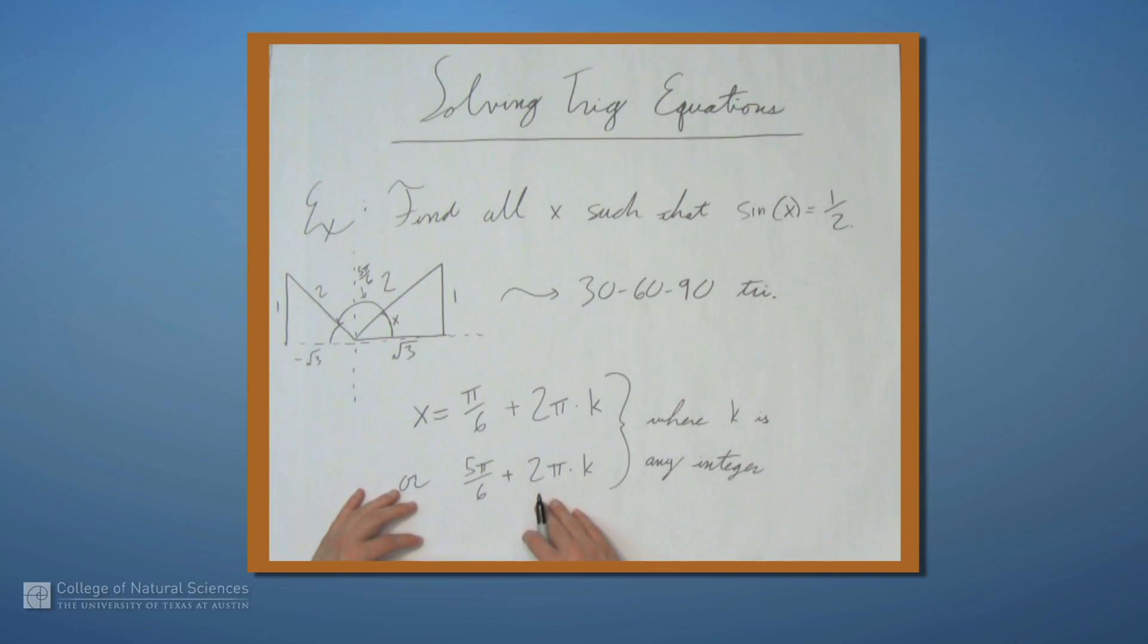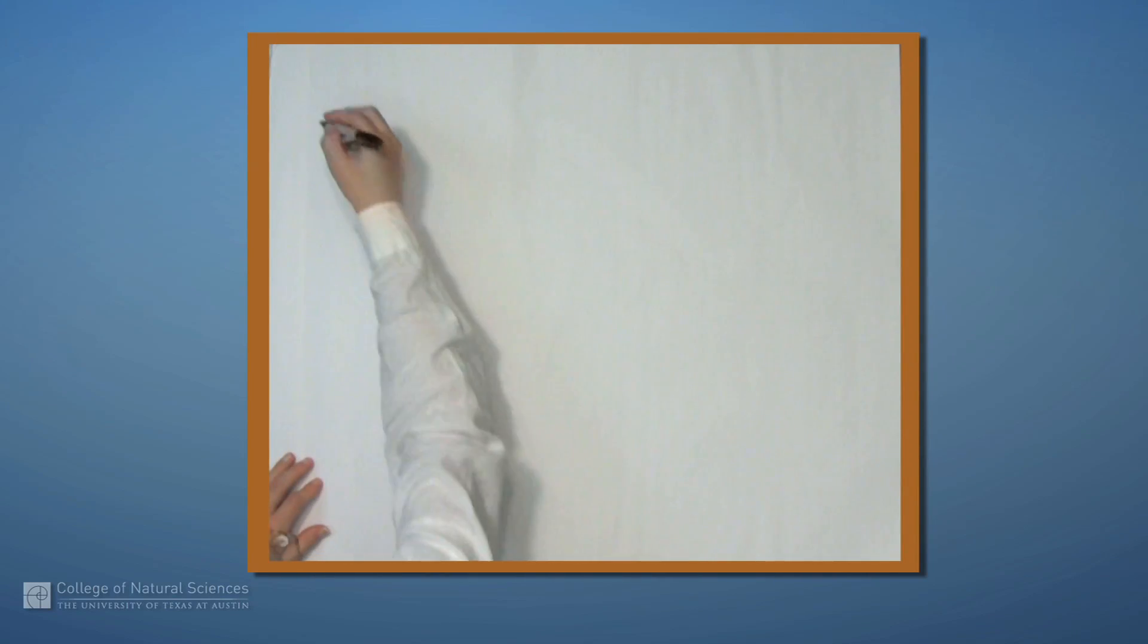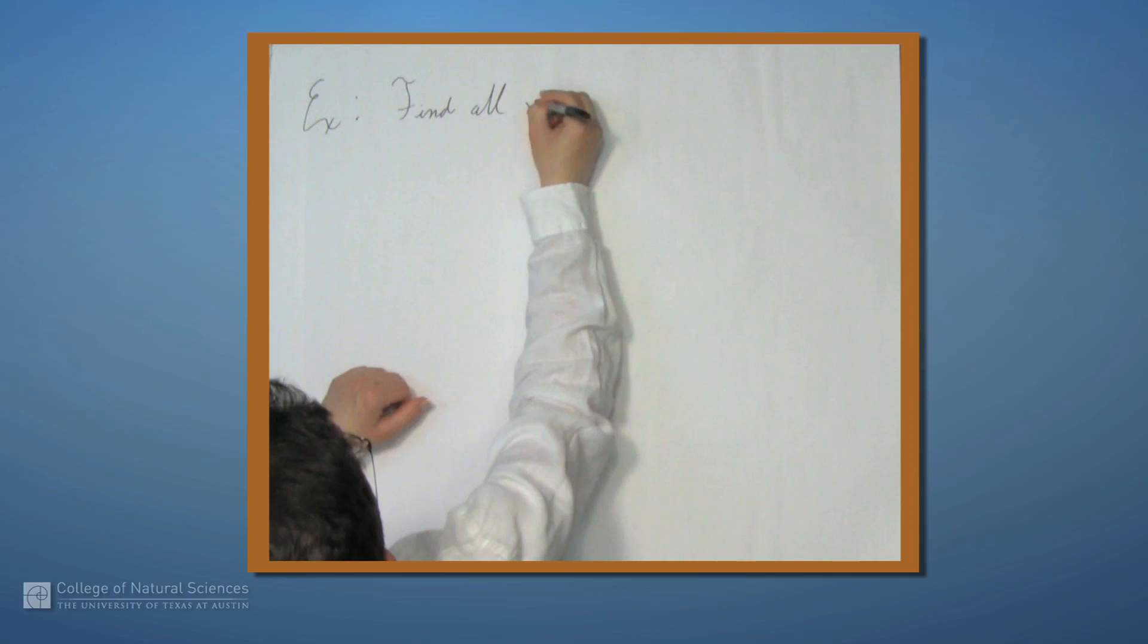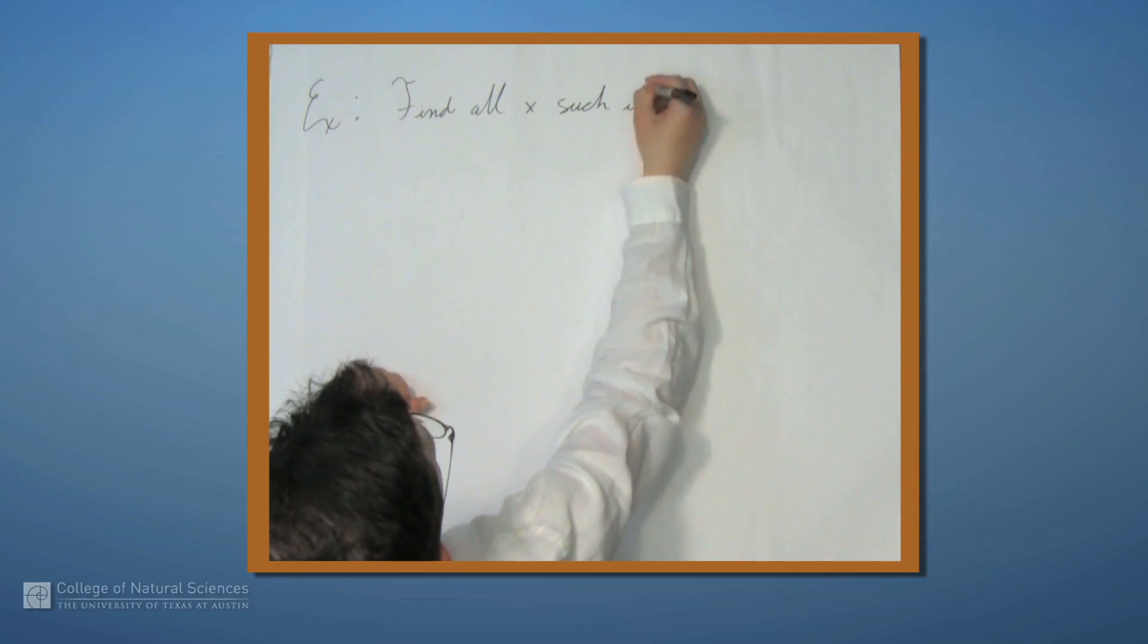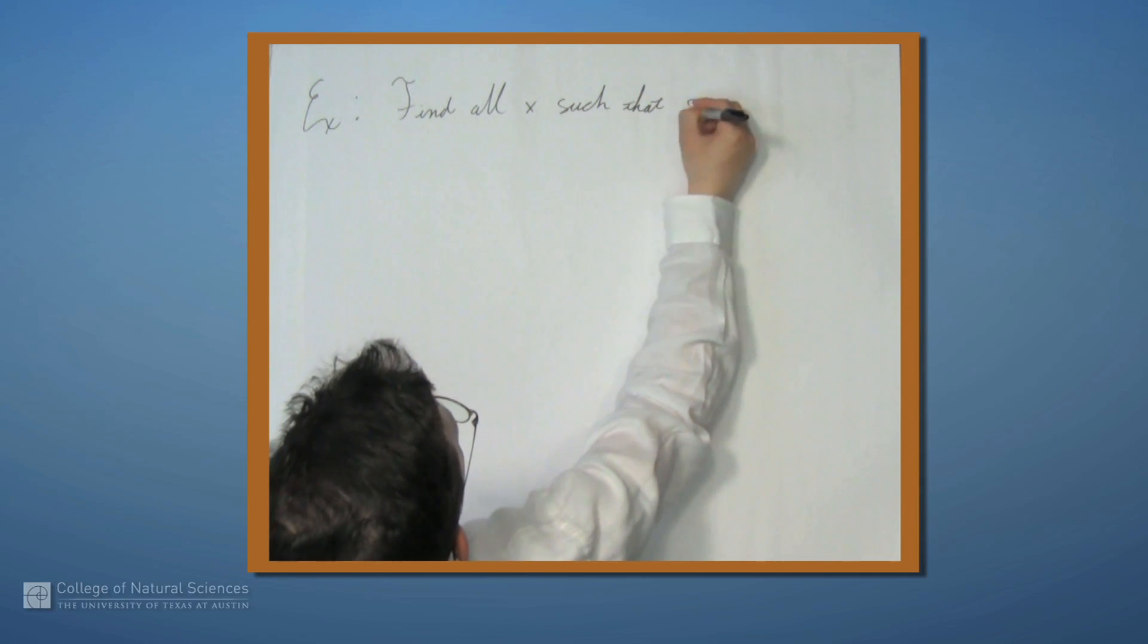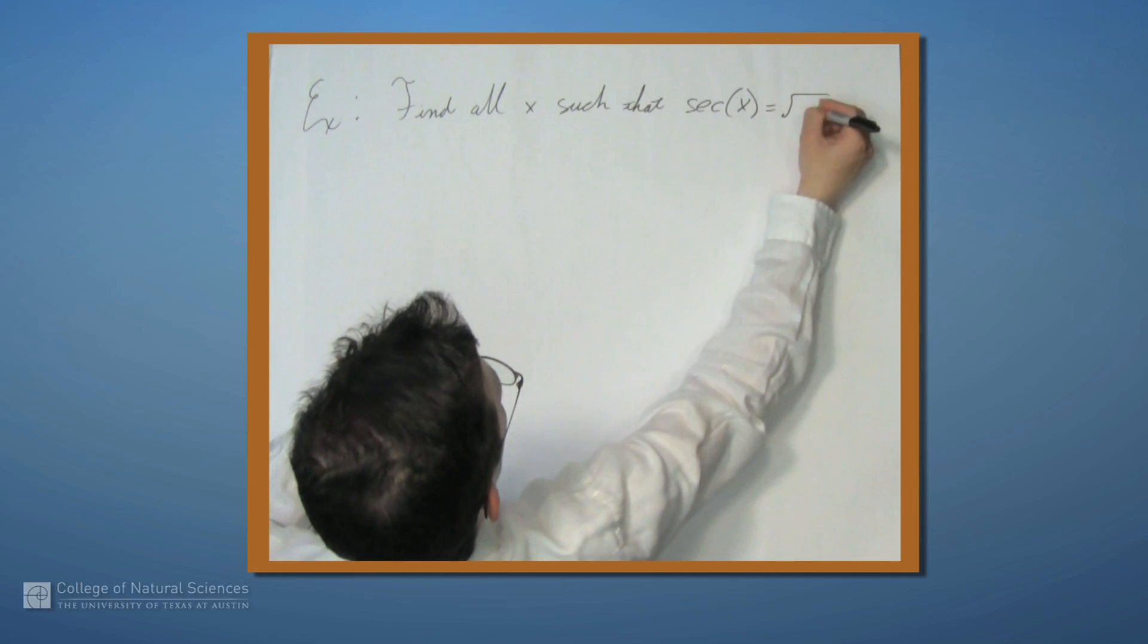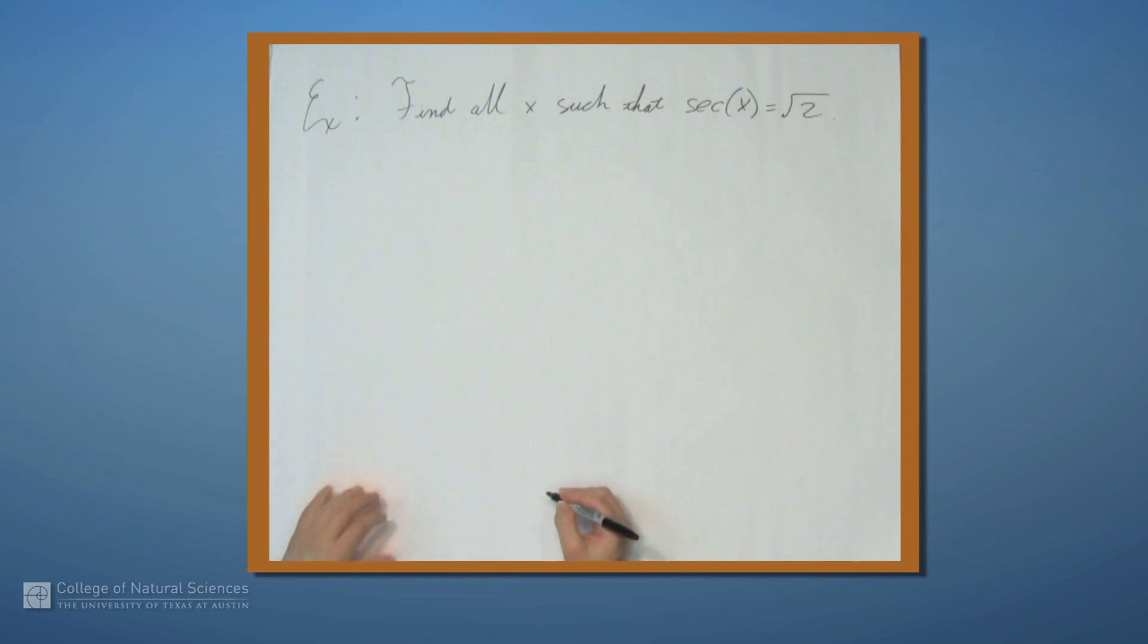So let's do one more example. So let's find all x such that secant of x equals square root of 2.